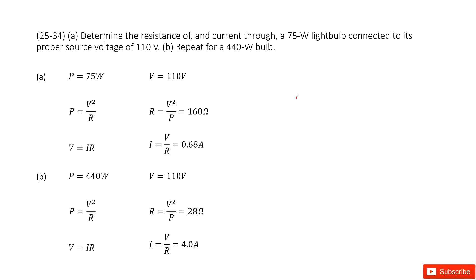We need to find two quantities for the light bulb: resistance and current. The given quantities are the power and the voltage. The power is 75 watts and the potential is 110 volts.